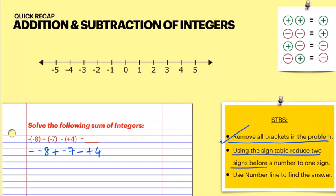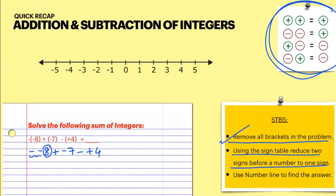Step two: using the sign table, reduce two signs before a number to one sign. Wherever you see two signs before a number, make it into one sign. Here, before eight there are two signs, before seven there are two signs, and before four there are two signs.